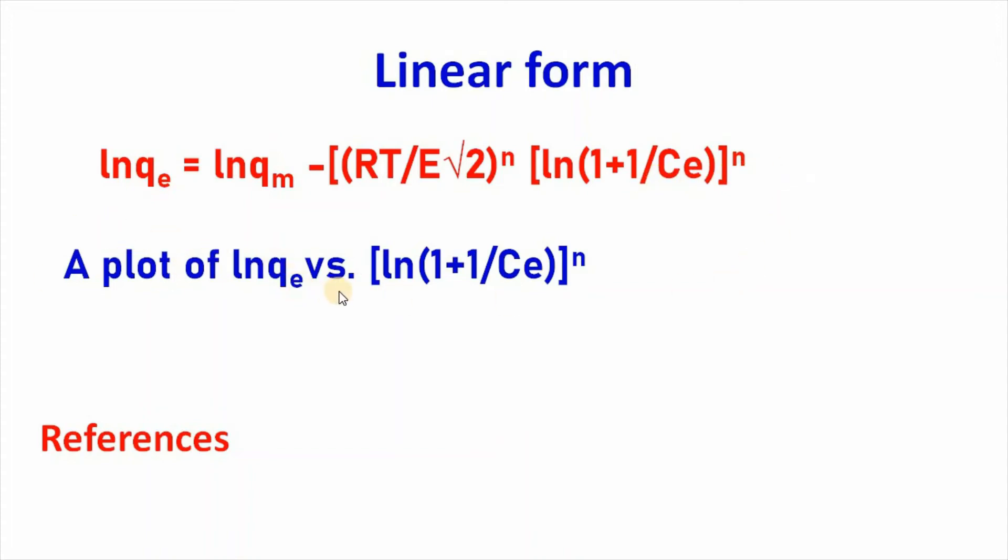A plot of ln q versus ln(1 plus 1 by C) to the power n gives intercept equal to ln qm and slope equal to RT divided by E root over 2 to the power n. Therefore, E equal to RT divided by root over 2 slope to the power 1 by n.